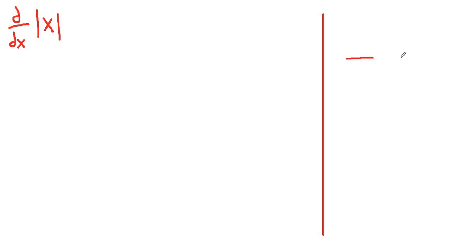Absolute value of x is differentiable at every point except at 0 because at 0 we have a spike here. It's not differentiable.